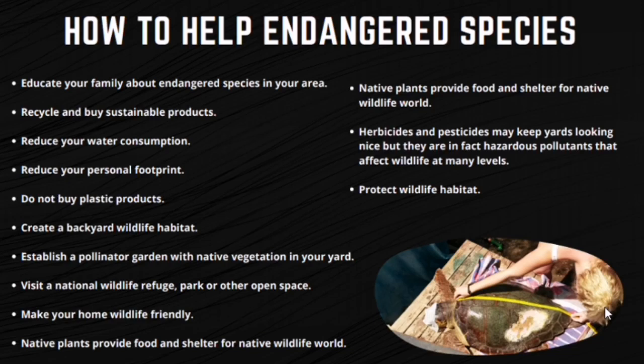Here are some things we can do. First, educate your family about indigenous species in your area — teach your friends and family about the wildlife, birds, fish, and plants that live near you. Just awareness of these species is a critical step. From the worms in our gardens to the bats that pollinate and control mosquitoes, there are many ways our daily habits at home affect these creatures. Second, recycle and buy sustainable products — much of what threatens local populations has to do with development.